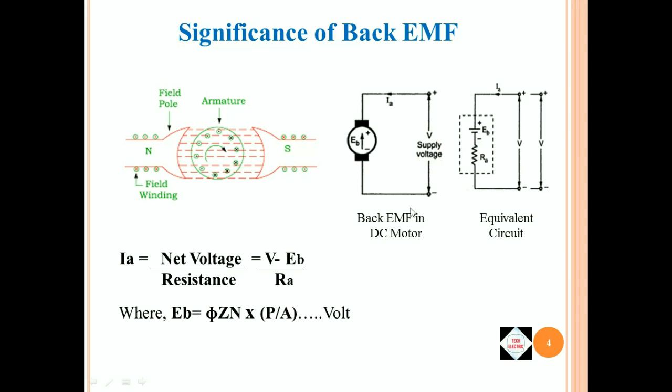This happens due to the Lenz Law. As I explained earlier, electromagnetically induced current always flows in such a direction that it tends to oppose the very cause which produces it. In this case, the cause is the supply voltage.